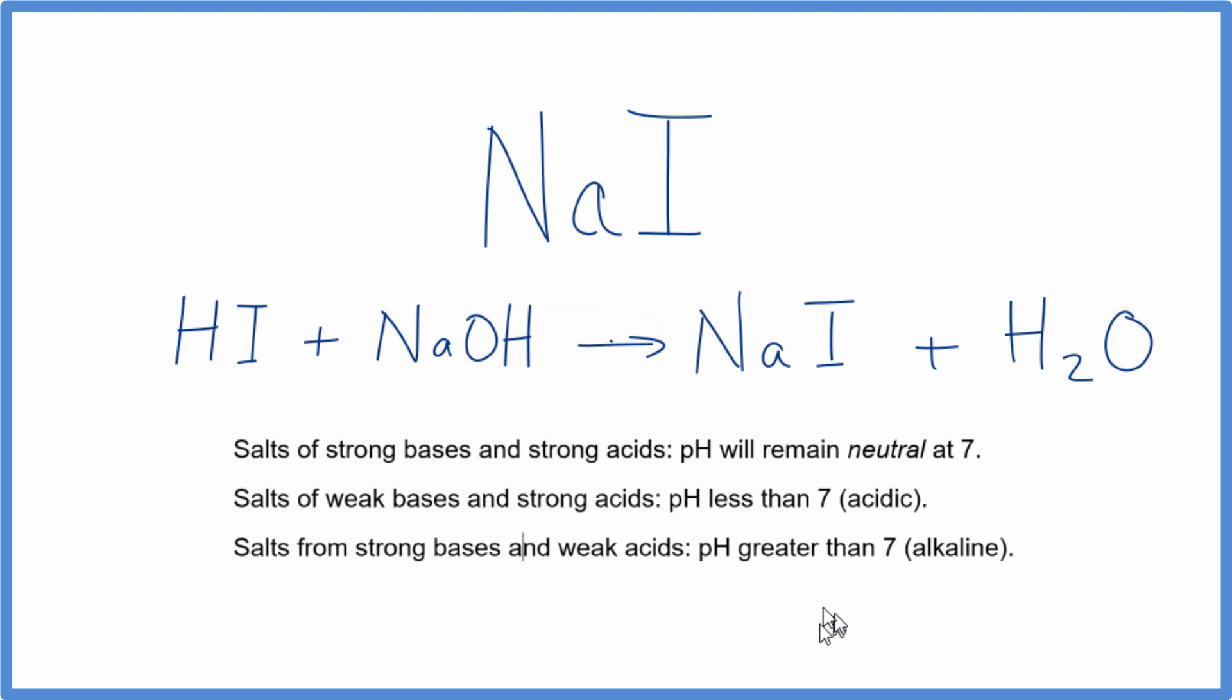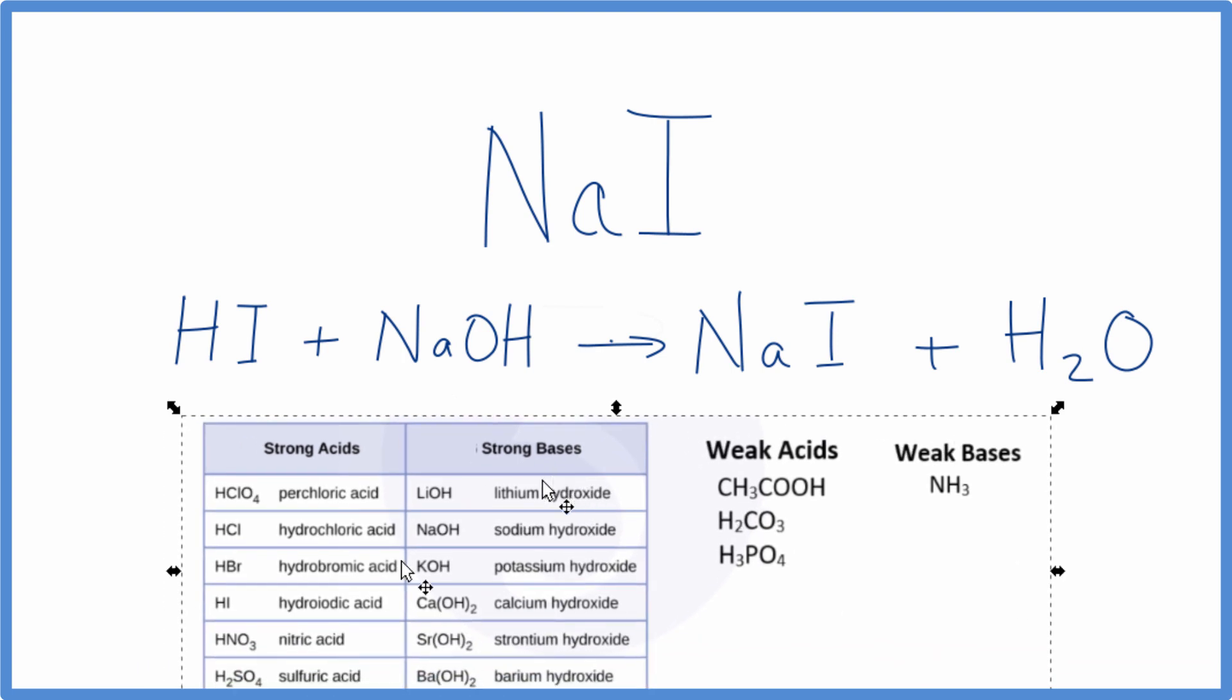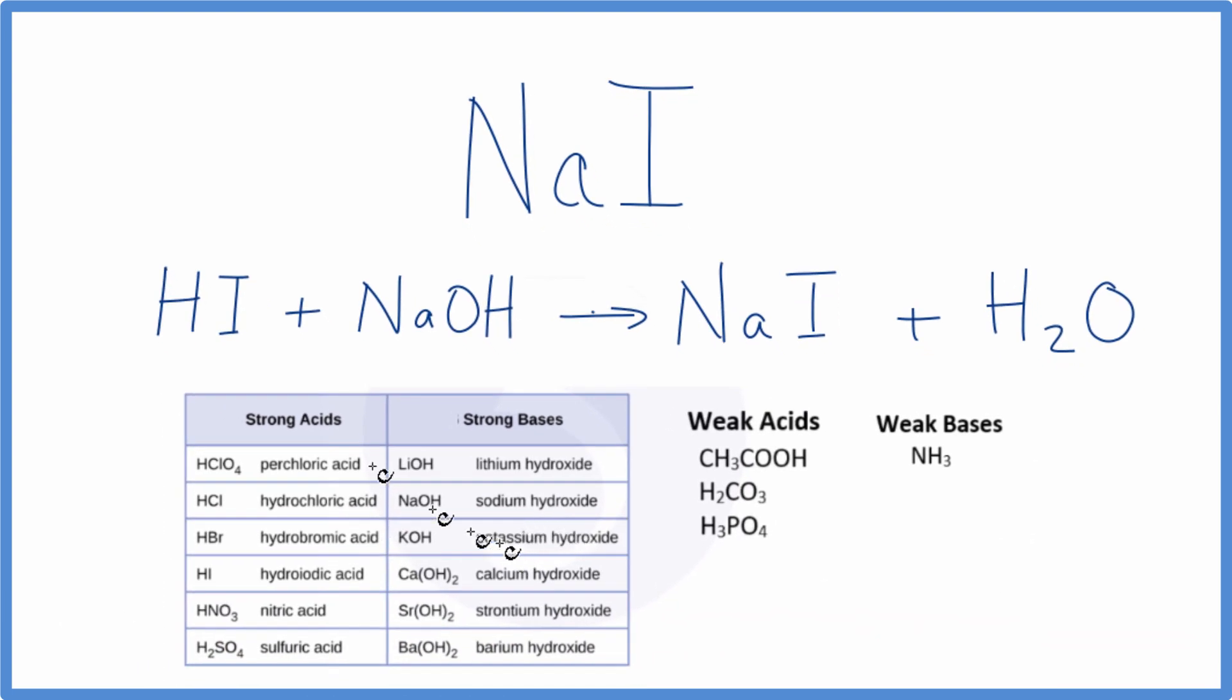Next, to use these rules here, we have to know the strength of this acid here and this base. And we can use this table to help us. This is a good one to have memorized. So HI is right here, hydroiodic acid. That's a strong acid.